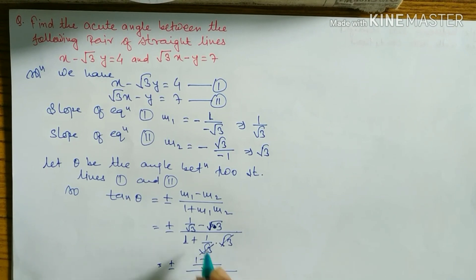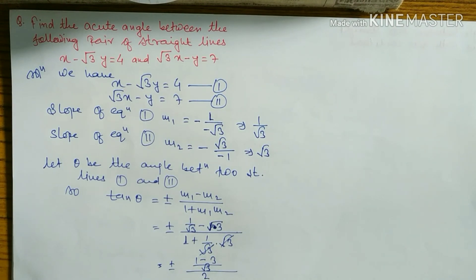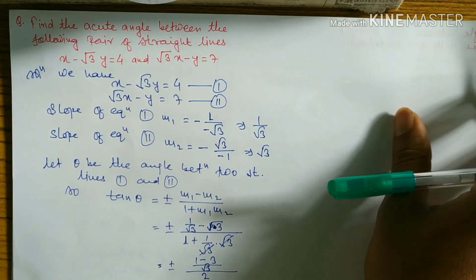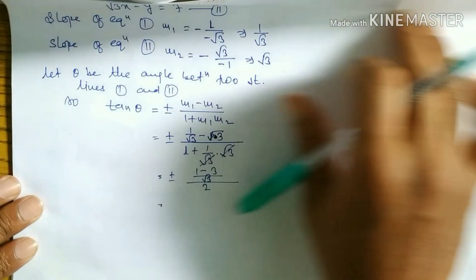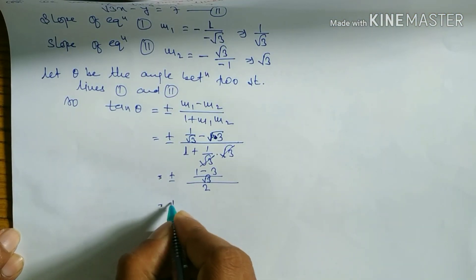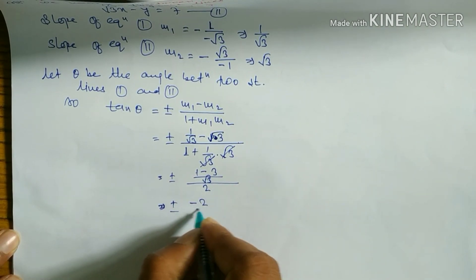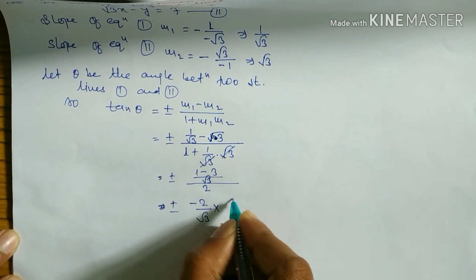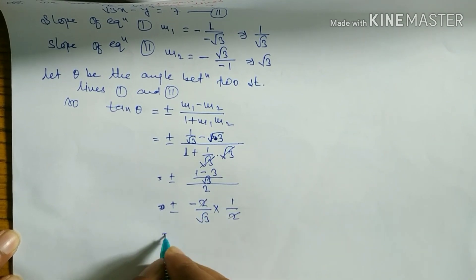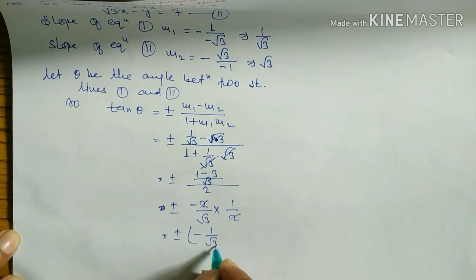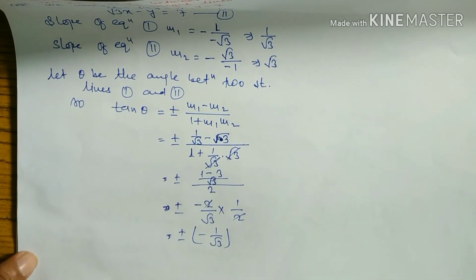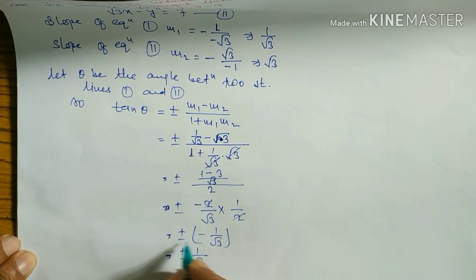Taking LCM as root 3, the numerator becomes 1 minus 3, which is minus 2, over root 3. The denominator is 1 plus 1 equals 2. Simplifying, the result is minus 1 over root 3, so tan theta equals plus or minus 1 over root 3.